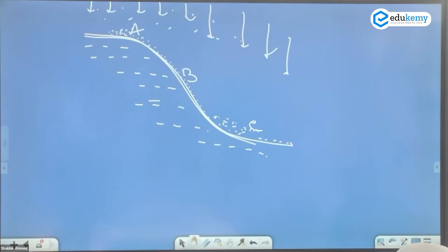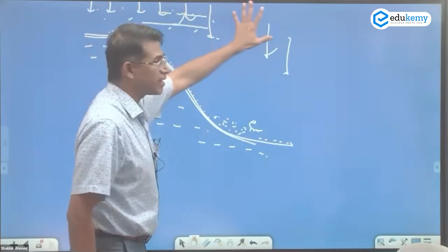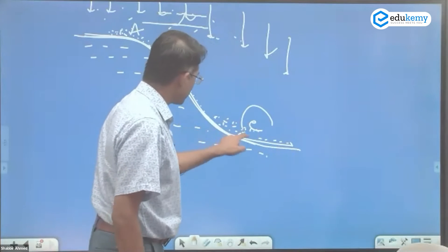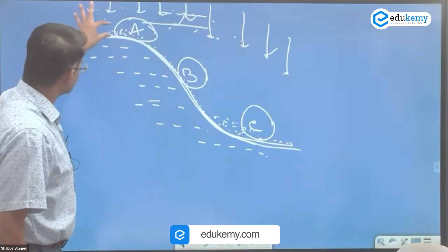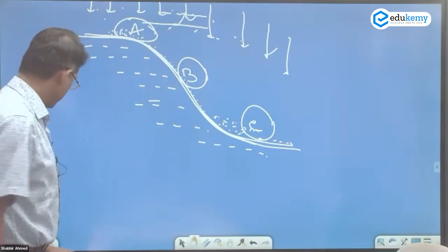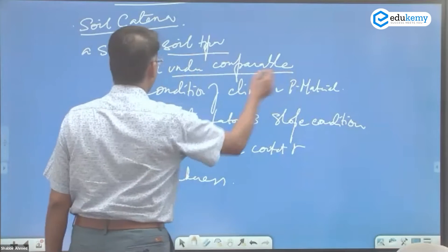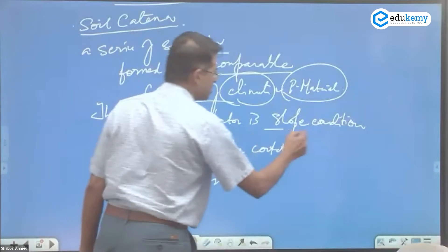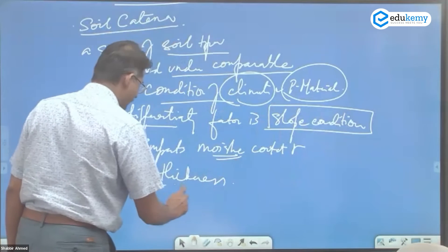In this location, the type of rocks are same. The climatic conditions are same. Same rainfall, same temperature and the rest. But because the slope condition is different, you have got three different types of soil formed. They are related to one another, but there is a difference. So this is called as the soil catena. That's what your definition tells you. It is a series of soil types formed under comparable conditions of climate and parent material. The differentiating factor is the slope conditions. The moisture is different and the soil thickness is different.